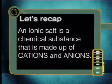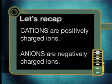An ionic salt is a chemical substance that is made up of cations and anions. Cations are positively charged ions and anions are negatively charged ions. We will start by looking at chemical tests that will allow us to identify what anions are present in solution. In this lesson, we will specifically be looking to identify halogen anions. These are known as the halides, and this is the general name given to the ionic salts of all group 7 elements.